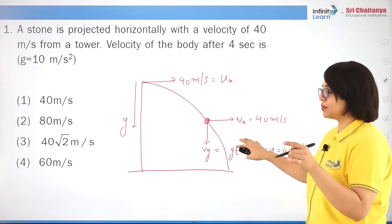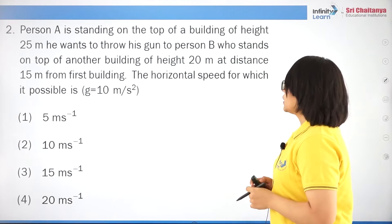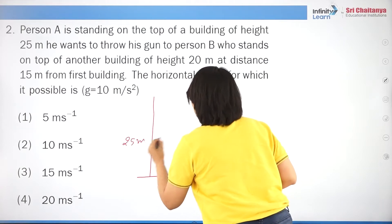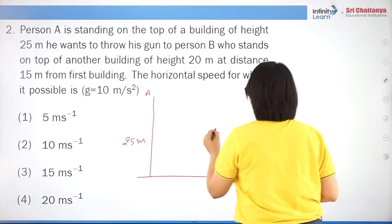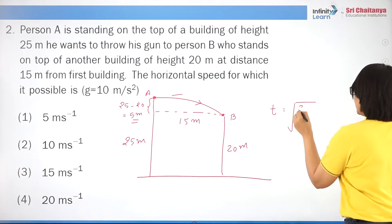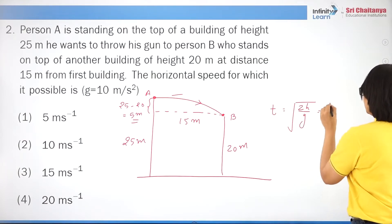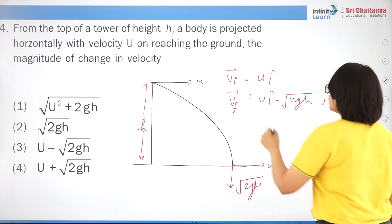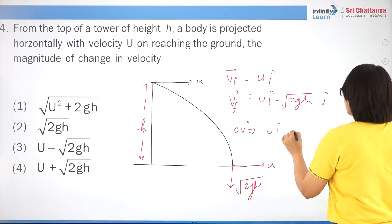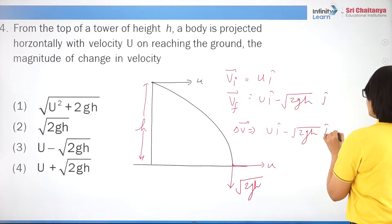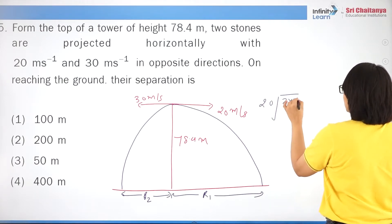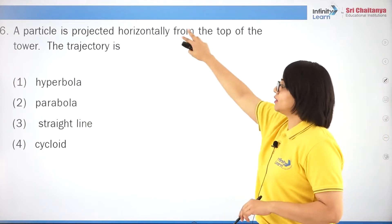After 4 seconds, the body will be somewhere along its path. It will have two components of velocity: one along the x-axis and one along the y-axis. Velocity along x-axis is constant at 40 m/s (no acceleration in x). Velocity along y-axis is gt = 10×4 = 40 m/s. Total velocity is √(40² + 40²) = 40√2 m/s, which is option 3.